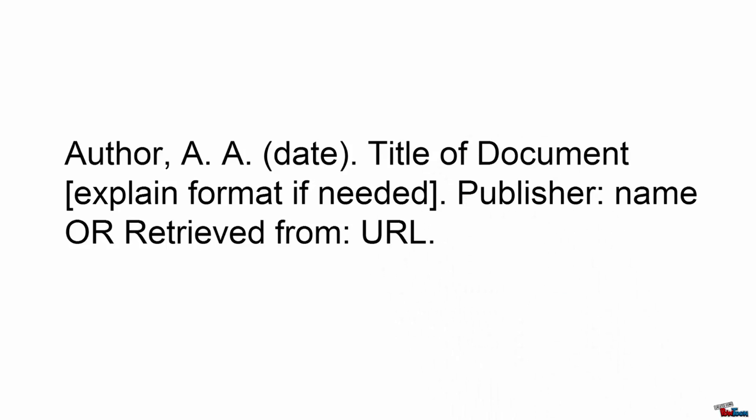Author last name, then initials, date in parentheses, title of the document, and if it's an unusual format, include that in brackets. Then you have the source. If you are citing an article, follow the title with the journal title italicized, the volume and issue of the journal, and then your page numbers.